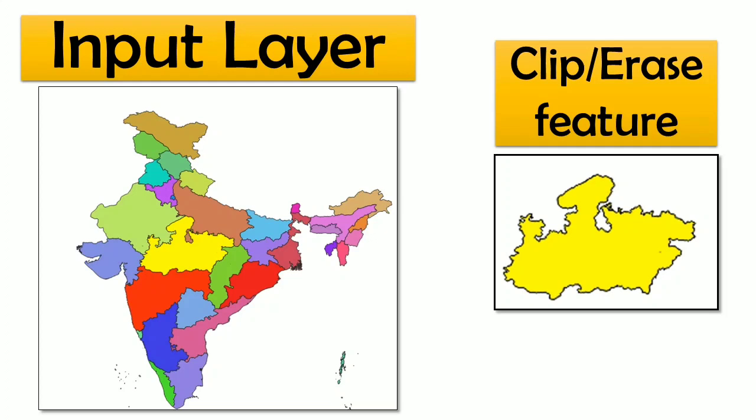So here is an example. The input layer is a shapefile of India from which I want to extract just one state, which is MP. So this state will be used as both the clip feature as well as the erase feature. You can find these tools in QGIS as well as ArcGIS.